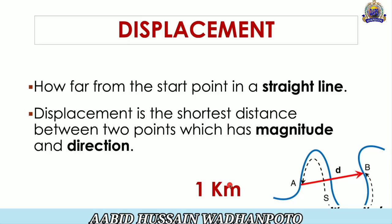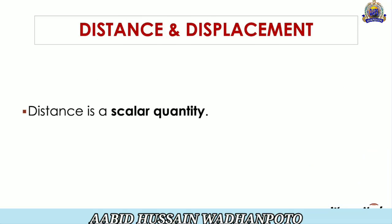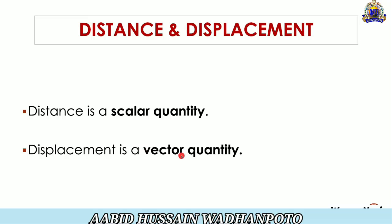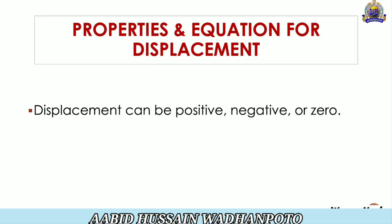Distance is a Scalar Quantity which does not have any particular direction — only magnitude. But Displacement is a Vector Quantity, meaning it requires not only magnitude but also a particular direction. If there is a particular direction, it is a Vector Quantity. If there is no particular direction, it is a Scalar Quantity. So Distance is a Scalar Quantity, but Displacement is a Vector Quantity.